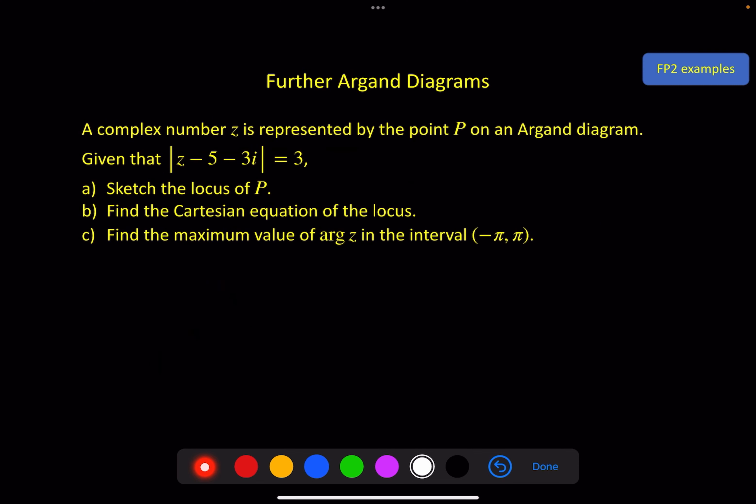Second example. A complex number z is represented by the point P on an Argand diagram. Given that |z - 5 - 3i| = 3, sketch the locus of P. Don't worry too much about the fact that there's a P in here. They could just as easily have said, find the locus of z. It's just very formal language. This is the same standard locus. We've got the modulus of z minus a complex number here, 5 + 3i, and the distance between them has to equal 3. So we've got 5 and 3i, so the center of the circle is here, and the radius of the circle is 3 units.